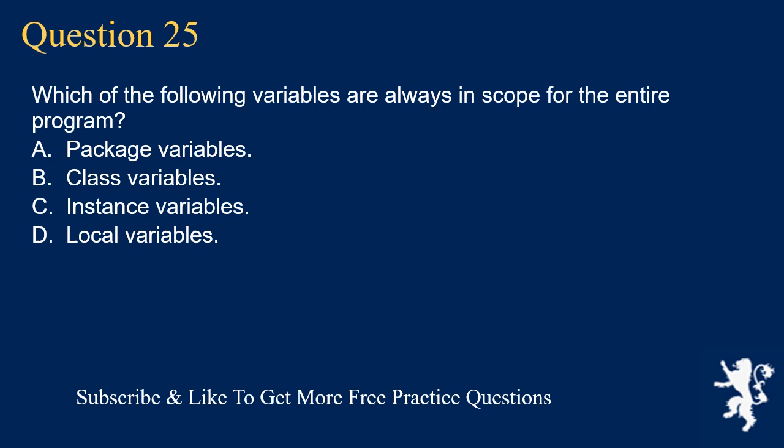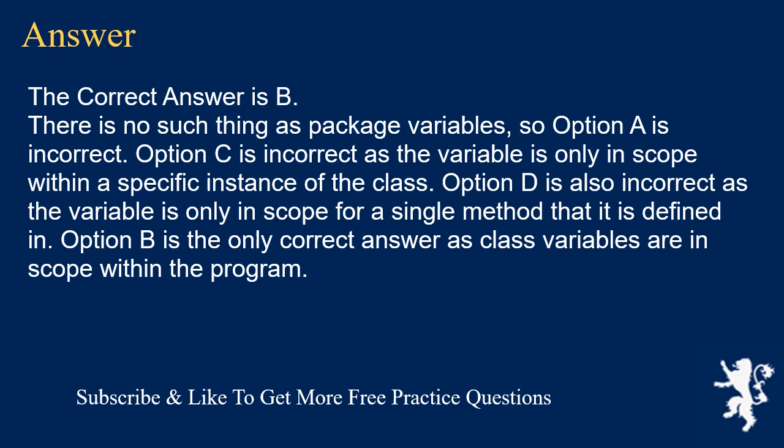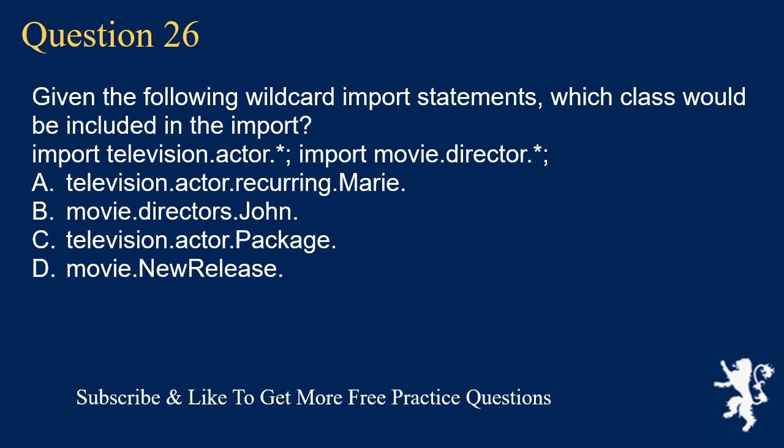Question 25: Which of the following variables are always in scope for the entire program? A) Package variables, B) class variables, C) instance variables, D) local variables. The correct answer is B. There is no such thing as package variables, so option A is incorrect. Instance variables are only in scope within a specific instance of the class, so C is incorrect. Local variables are only in scope for the single method in which they are defined, so D is incorrect. Class variables are in scope within the entire program, making B the correct answer.